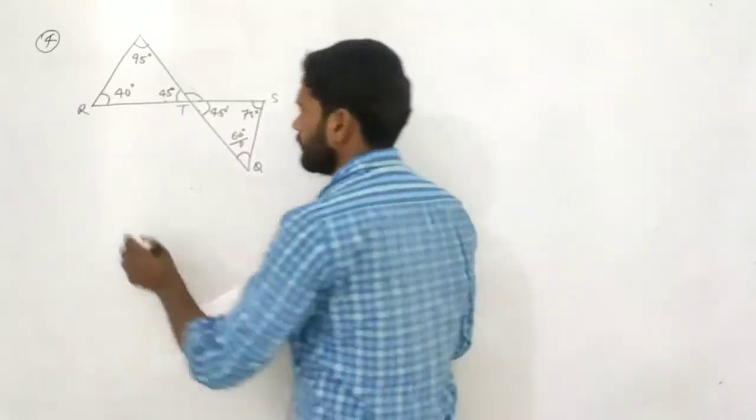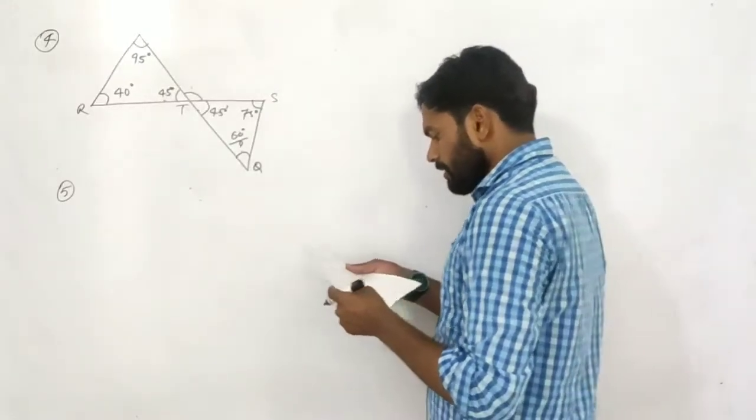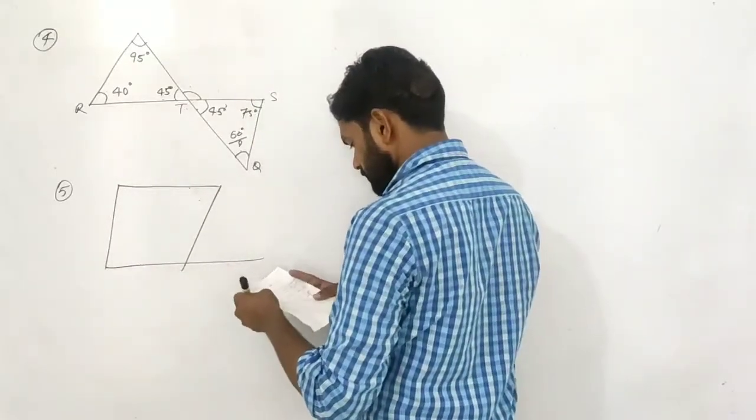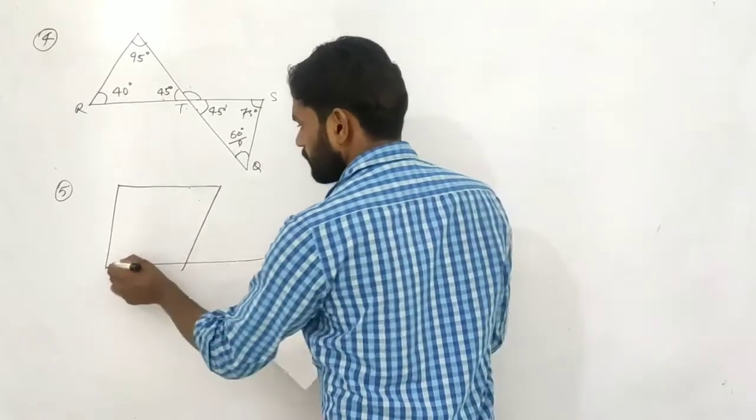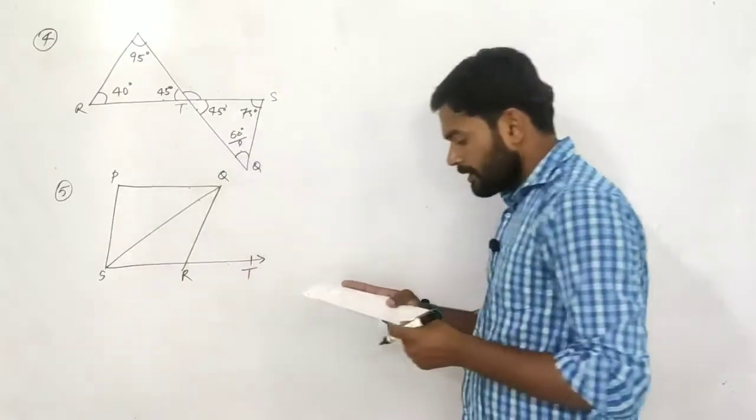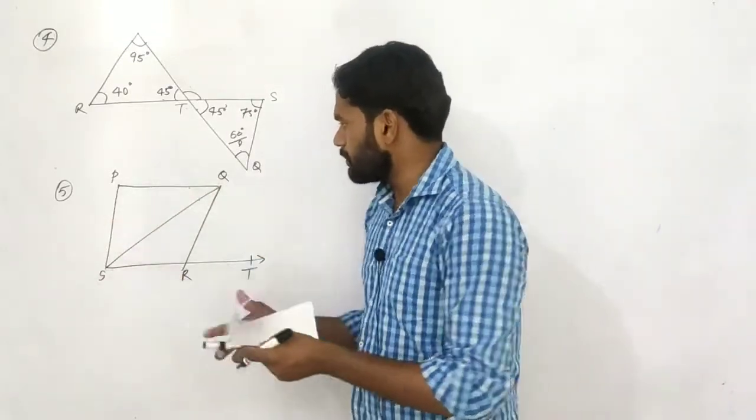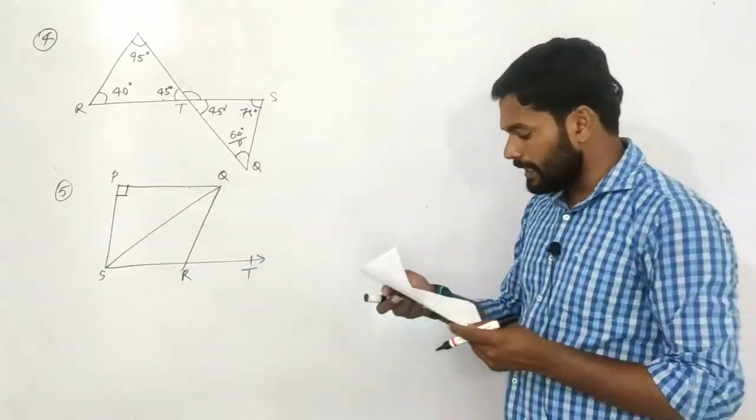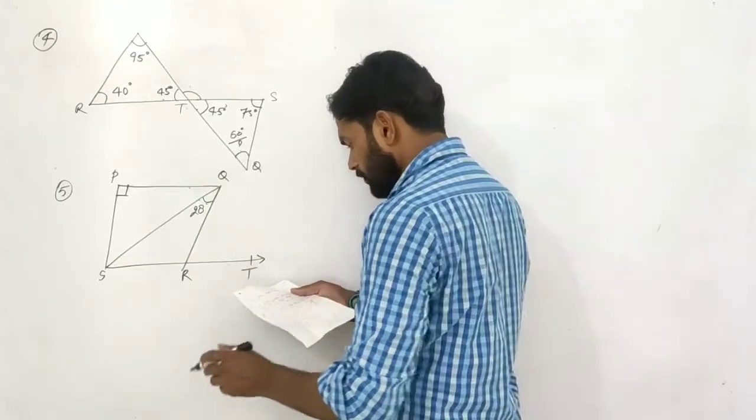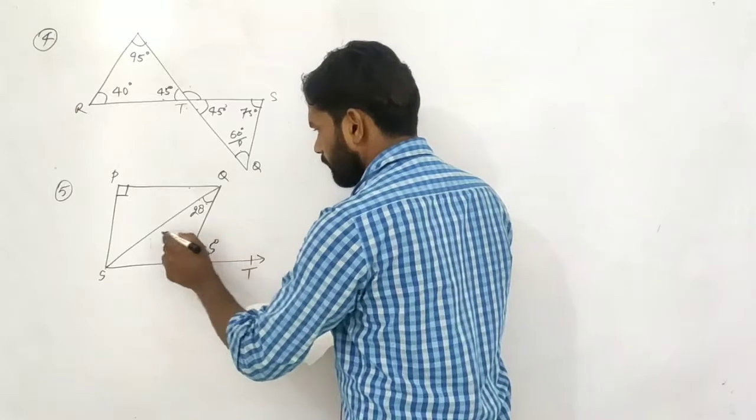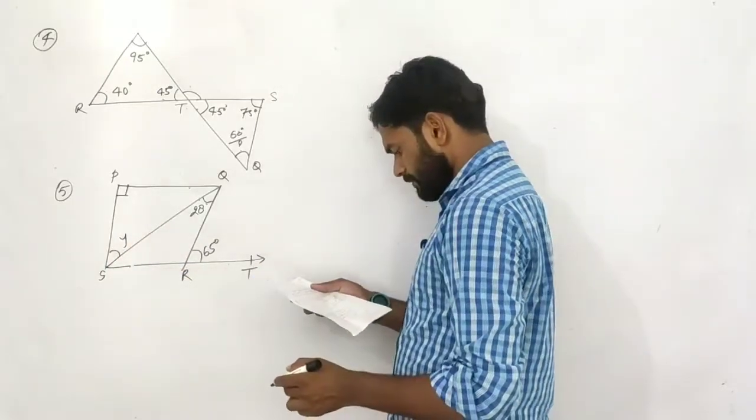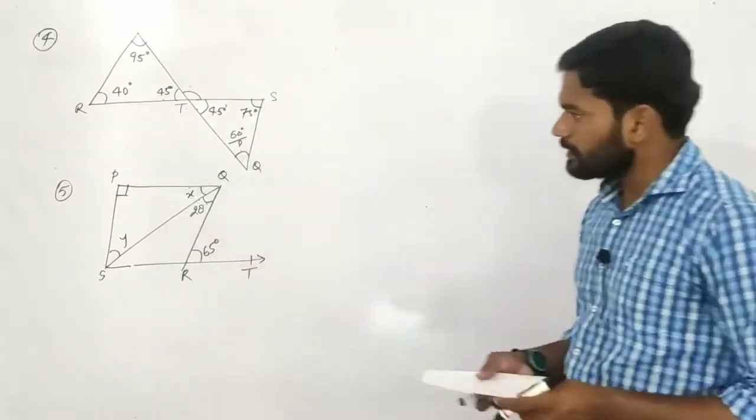In the given structure, a structure is given like this: P, Q, R, S and T. In the given structure, PQ and PS both are perpendicular to each other. And then angle SQR is 28 degrees, angle QRT is 65 degrees. Then what will be the value of x? This is y and this is x.